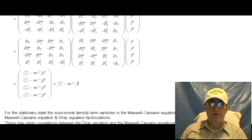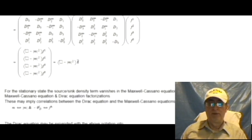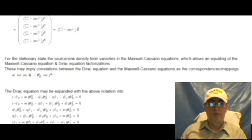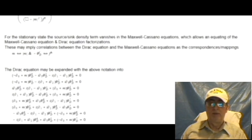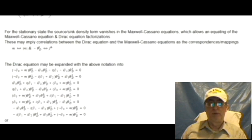For the stationary state, the source-sync density term vanishes in the Maxwell-Casano equations, which allows an equating of the Maxwell-Casano equations and Dirac equation factorizations. These may imply correlations between the Dirac equation and the Maxwell-Casano equations, as the correspondence mappings: m equals magnitude of m, and negative theta sub d to the j equals f to the h.